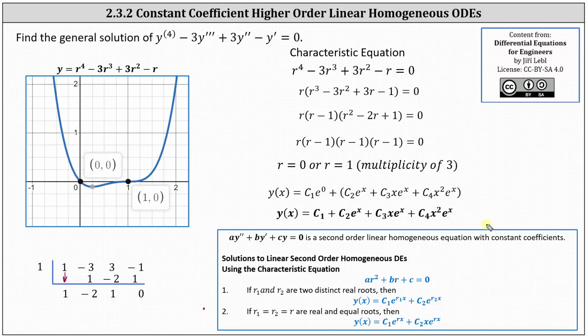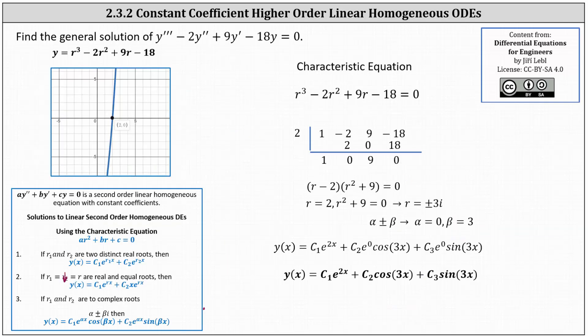Let's look at one more example where we have complex roots. Let's find the general solution to two y triple prime minus two y double prime plus nine y prime minus 18y equals zero. The characteristic equation is r cubed minus two r squared plus nine r minus 18 equals zero. Analyzing the graph on the left, we can see one root is r equals two, which gives us a factor of r minus two. And then to determine the remaining factor, we perform synthetic division using two. The coefficients are one, negative two, nine, and negative 18, and the root of two is outside.